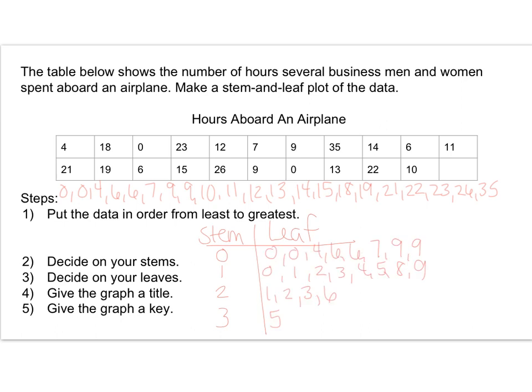Go ahead and check my stem-and-leaf plot. I double-checked that I had 21 leaves. That would match the 21 pieces of data in my table. I've got my stems, I've got my leaves. I don't have a title, so I'm going to call this Hours On a Plane. Ideally, that would be above my stem-and-leaf chart, but I'm a little squished on space. I need to have a key as well. I'm just going to pick a data point like 2|3, and that means that person was on the airplane for 23 hours.